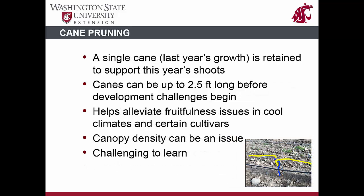In cane pruning, longer sections of last year's growth are retained. This is beneficial in cooler climates that might suffer from low bud fruitfulness, as it retains more buds that develop later in the season when it is warmer, thus favoring cluster development over tendrils. However, canes should be about two and a half feet or less due to the development of apical dominance, which can result in uneven bud break along the length of the cane. Maintaining shoot positioning and thus attaining proper canopy density can also be a challenge, as shoot spacing is dictated by internode length, which was set by last year's growth rate.